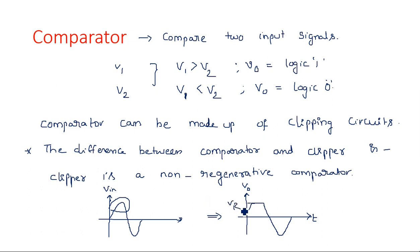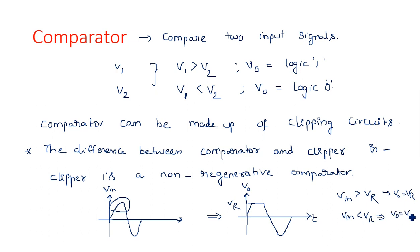That's why it may also be called a non-regenerated comparator, because it is comparing with respect to the reference voltage, keeping either the input voltage or VR as it is. If V_in is greater than VR, the output is equal to VR. If V_in is less than VR, the output V_out is equal to V_in. With these two conditions, the output waveform is drawn. The comparison takes place between the input voltage and the reference voltage, and the output level is determined.